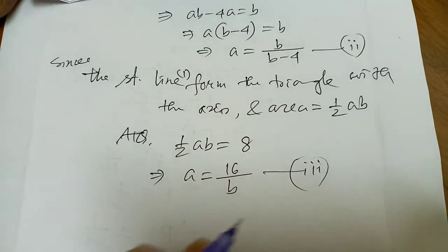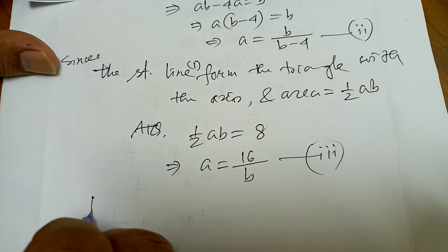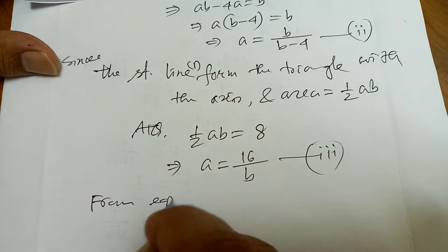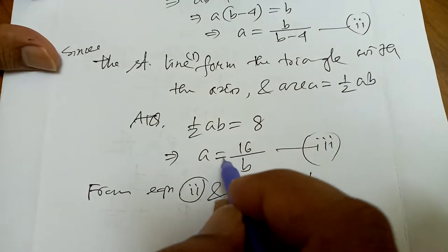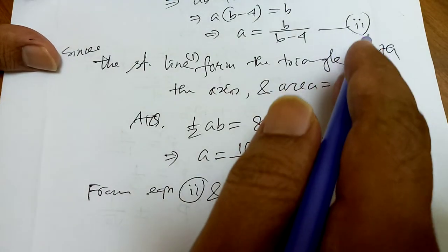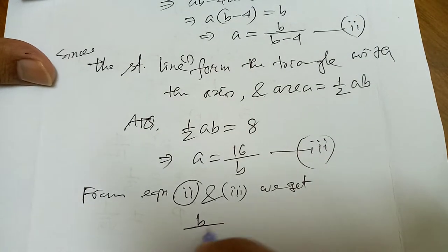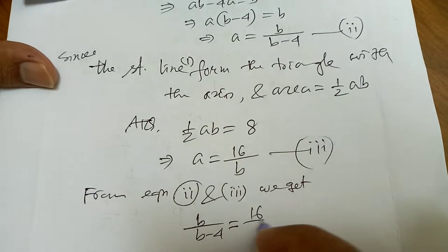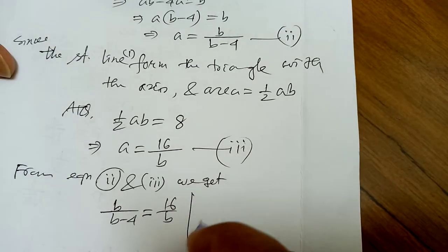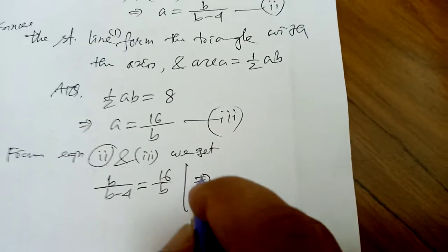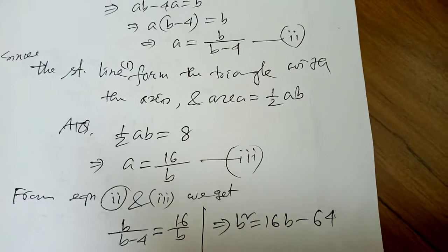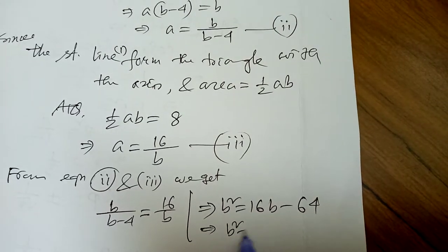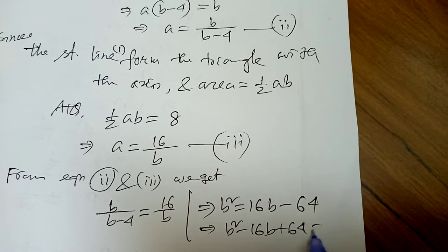From equations 2 and 3: both expressions equal a, so b/(b − 4) = 16/b. Cross multiplying: b² = 16b − 64, which gives b² − 16b + 64 = 0. Factoring: (b − 4)(b − 8) = 0, because 8² = 64.